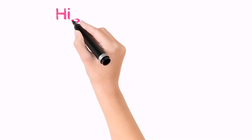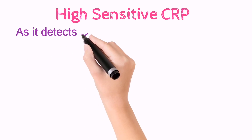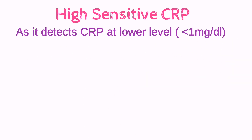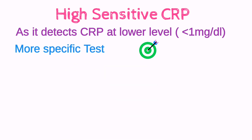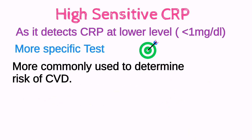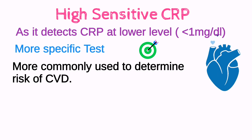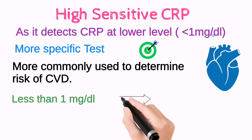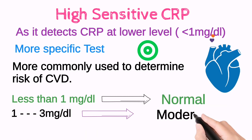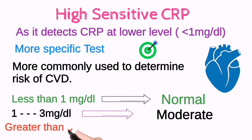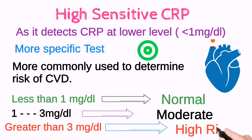Now let's discuss the high-sensitive CRP test. A high-sensitive CRP test detects C-Reactive Protein at a lower level, that's why it's named high-sensitive CRP. If we compare hsCRP with the CRP test, hsCRP is more specific than the CRP test. This test is commonly used to determine the risk of cardiovascular disease, shortly CVD. Less than 1mg per deciliter is normal, 1 to 3mg per deciliter is considered moderate risk of CVD, and above 3mg per deciliter is counted as the high-risk CVD group.